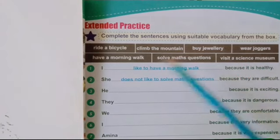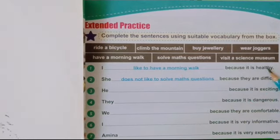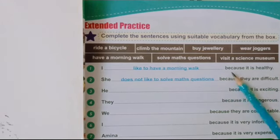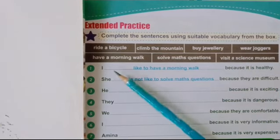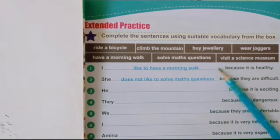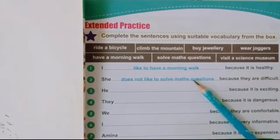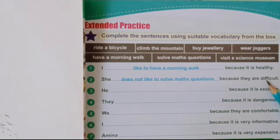The first example is: 'I like to have a morning walk because it is healthy.' The reason is given using 'because.' Next: 'She does not like to solve math questions because they are difficult.' Are you getting it, students? We have to select the vocabulary and focus on the structure — subject, verb form, vocabulary, because, reason.